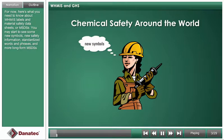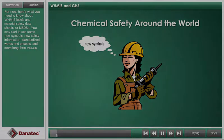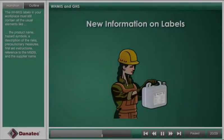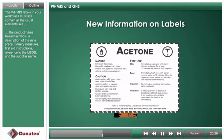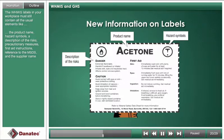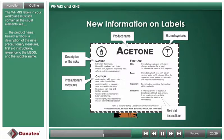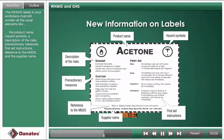You may start to see some new symbols. The WHMIS labels in your workplace must still contain all the usual elements, like the product name, hazard symbols, a description of the risks, precautionary measures, first aid instructions, reference to the MSDS, and the supplier name.